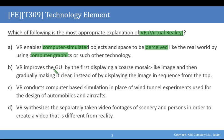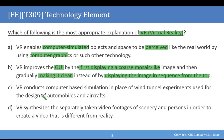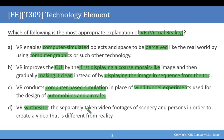B: VR improves GUI by first displaying a coarse mosaic-like image and then gradually making it clearer, instead of displaying the image in the sequence from the top. C: VR conducts computer-based simulation in place of wind tunnel experiments used for the design of automobiles and aircrafts. D: VR synthesizes the separate taken video footages from scenery and persons in order to create a video that is different from reality.